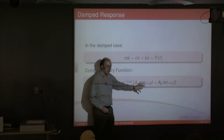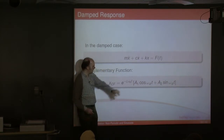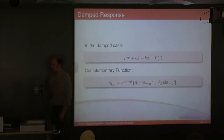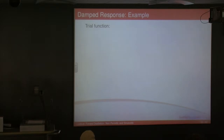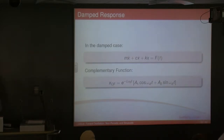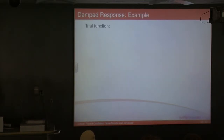Obviously this is now omega_d — we've seen that before from last week — so we don't need to worry too much about the complementary function. For the particular integral, in this case I'm assuming a constant rectangular forcing function, so x_pi is gamma.